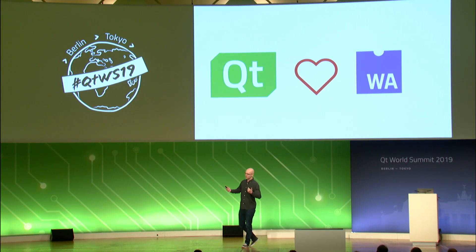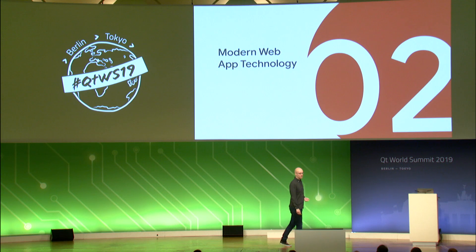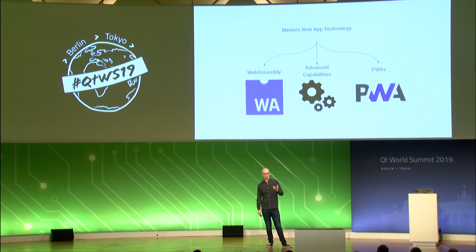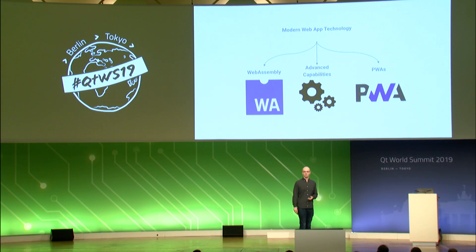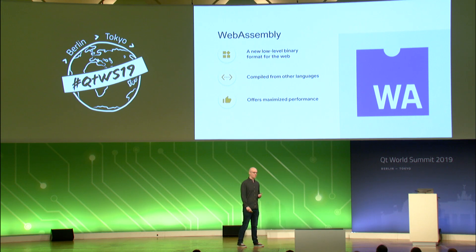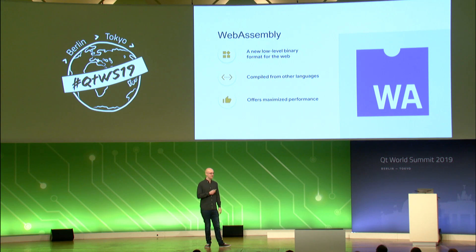Qt came to the web through something called WebAssembly, which ties into modern web app technologies and the things we're building in Chrome to empower web apps. When I think about modern web technologies, I think about it in three pieces: WebAssembly, advanced capabilities, and progressive web apps. WebAssembly is a new low-level binary format for the web that is designed to be compiled from other languages and offers reliable and maximized performance. Let's dig into each of those advantages.